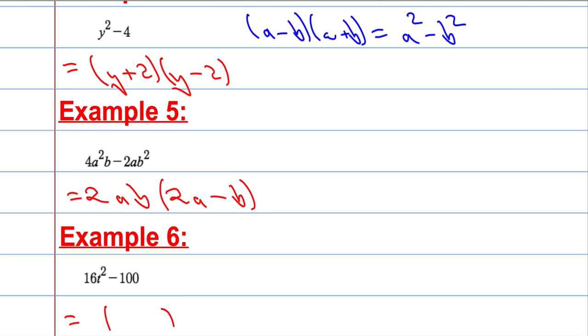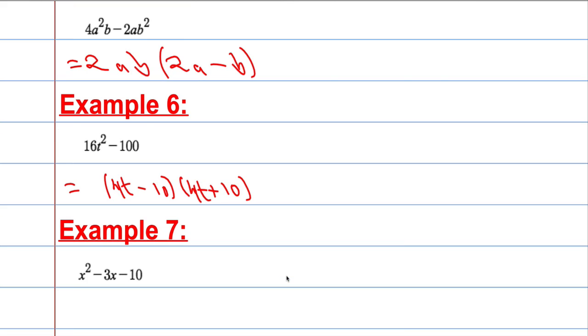So what I do is open up the brackets, and what I can do is take the square root of 16t squared, which gives me 4t. That goes at the front of both, plus and a minus, sorry, minus and a plus. And then the square root of 100, 10. And again, you can check it by expanding out if you're not sure.